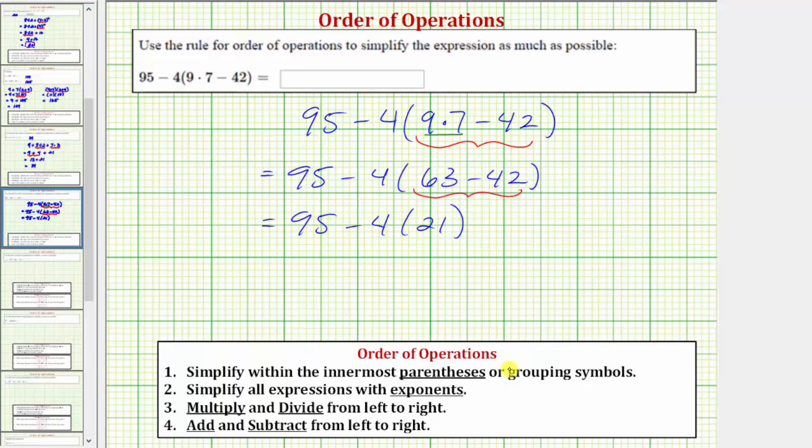Now that we've simplified the parentheses, we can skip step 2 because we don't have any exponents. We're back to using steps 3 and 4, where we multiply and divide from left to right, then add and subtract from left to right. Our next step is to find this product: 4 times 21 equals 84. This simplifies to 95 minus 84.